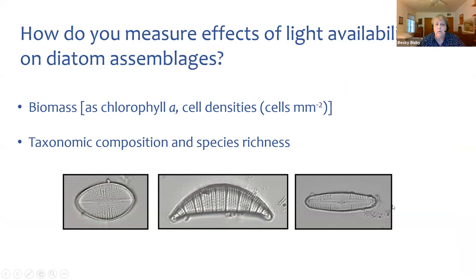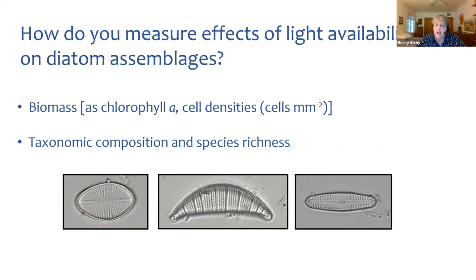How do you measure the effects of light availability on diatom assemblages? There are four main parameters you might use. The first is biomass — as chlorophyll a or cell densities. Chlorophyll a can actually change with light availability; in low light environments, chlorophyll a may be more concentrated per cell. But if you measure bio volume, which gives you an idea of the 3D nature of the community, you find that cell bio volume actually hasn't changed. So chlorophyll a can be an interesting parameter to look at in relation to light availability.